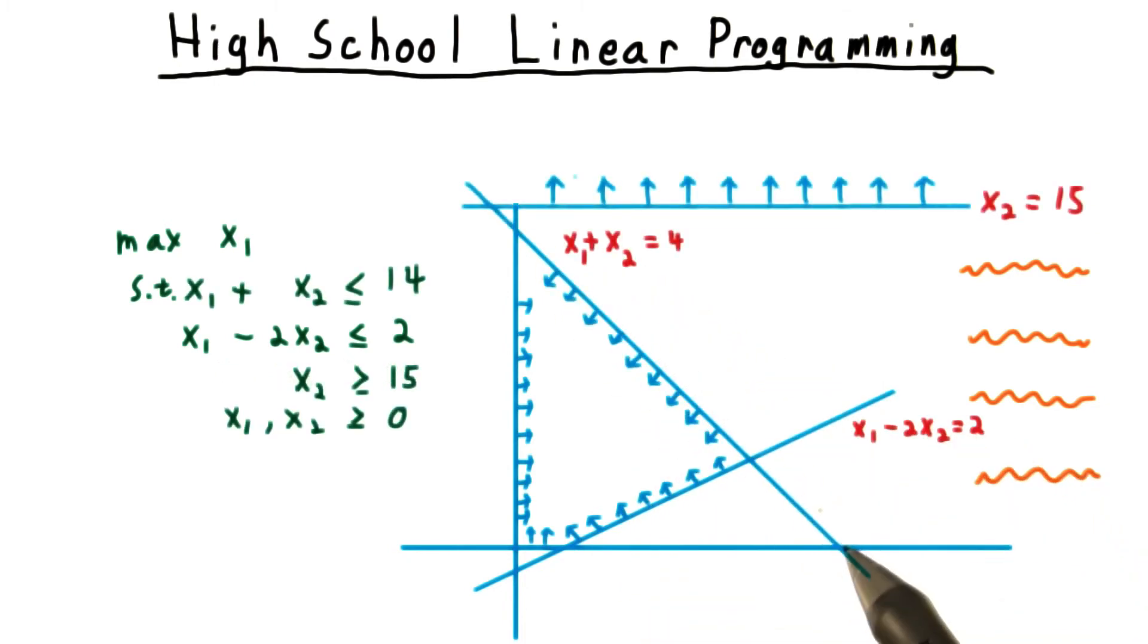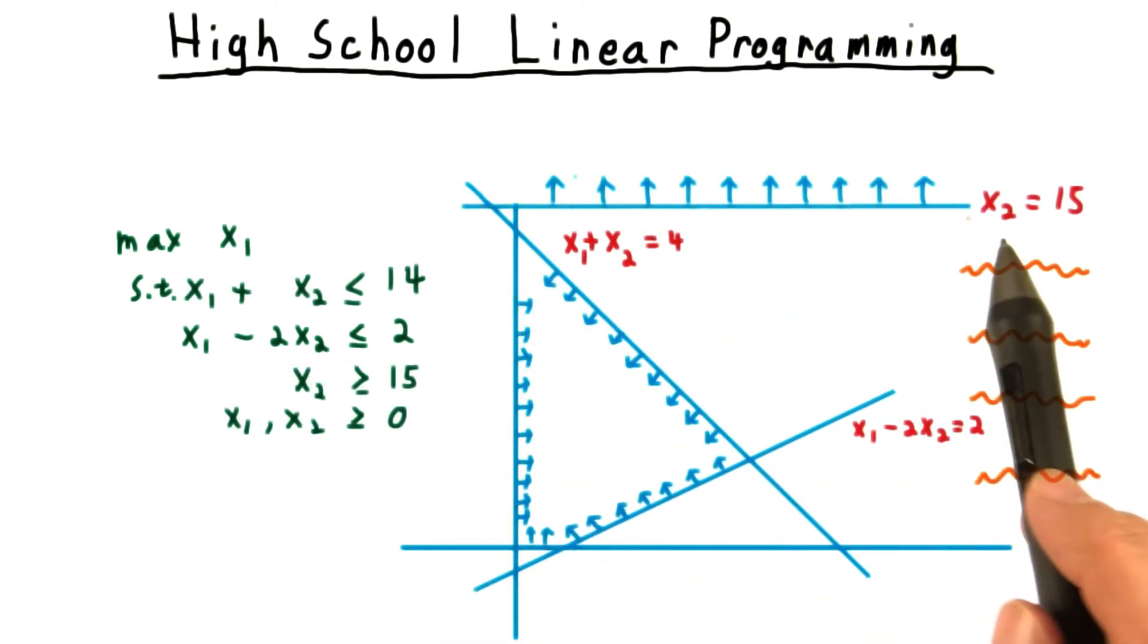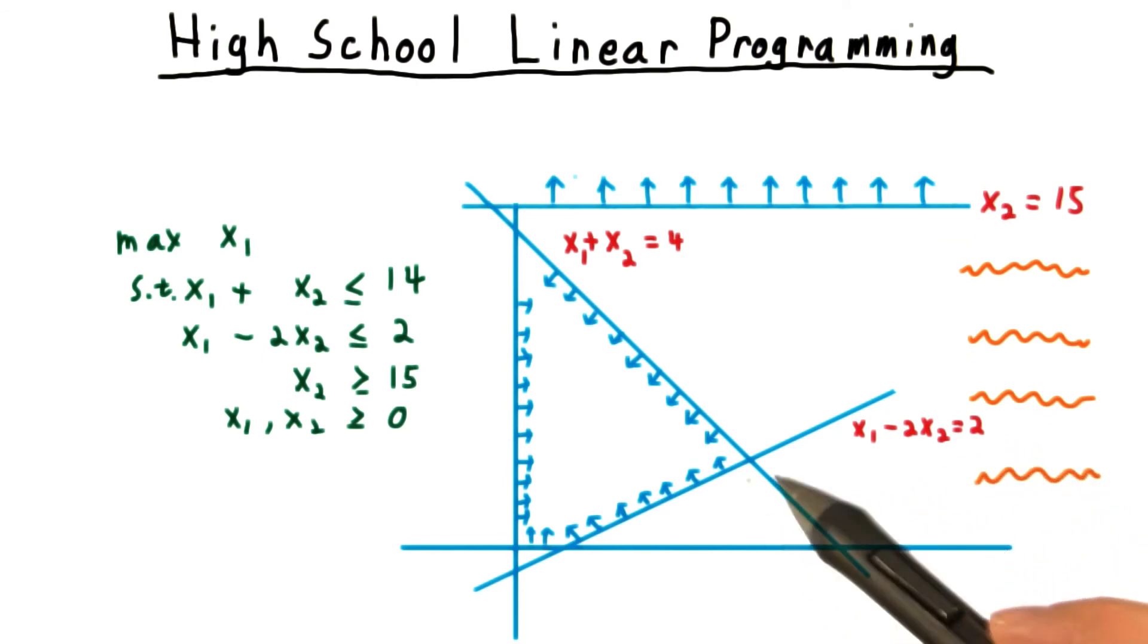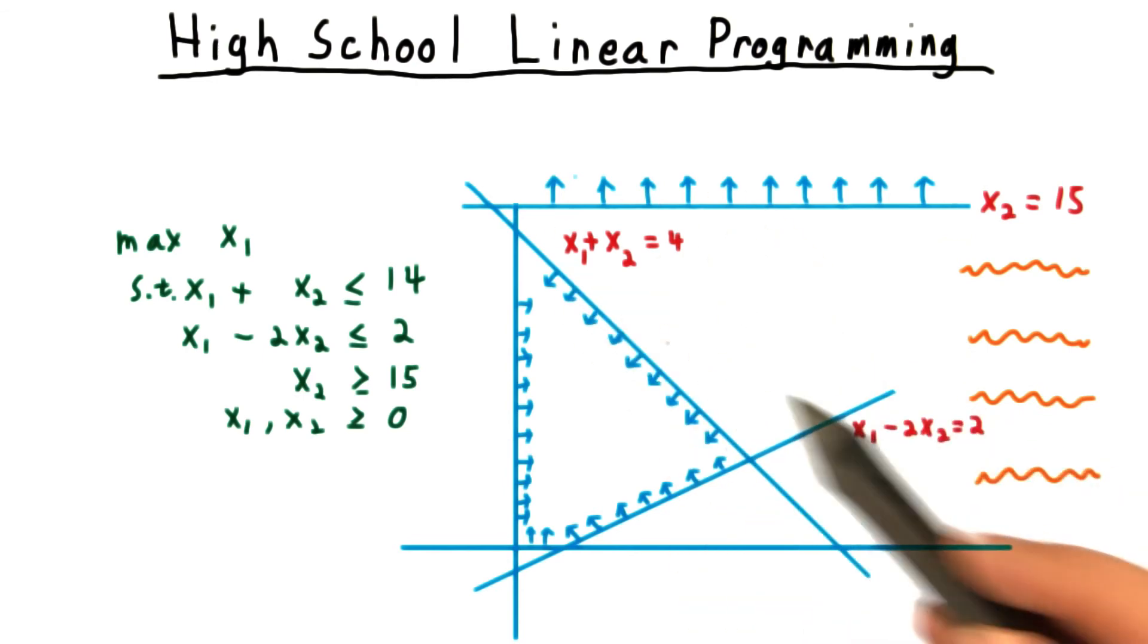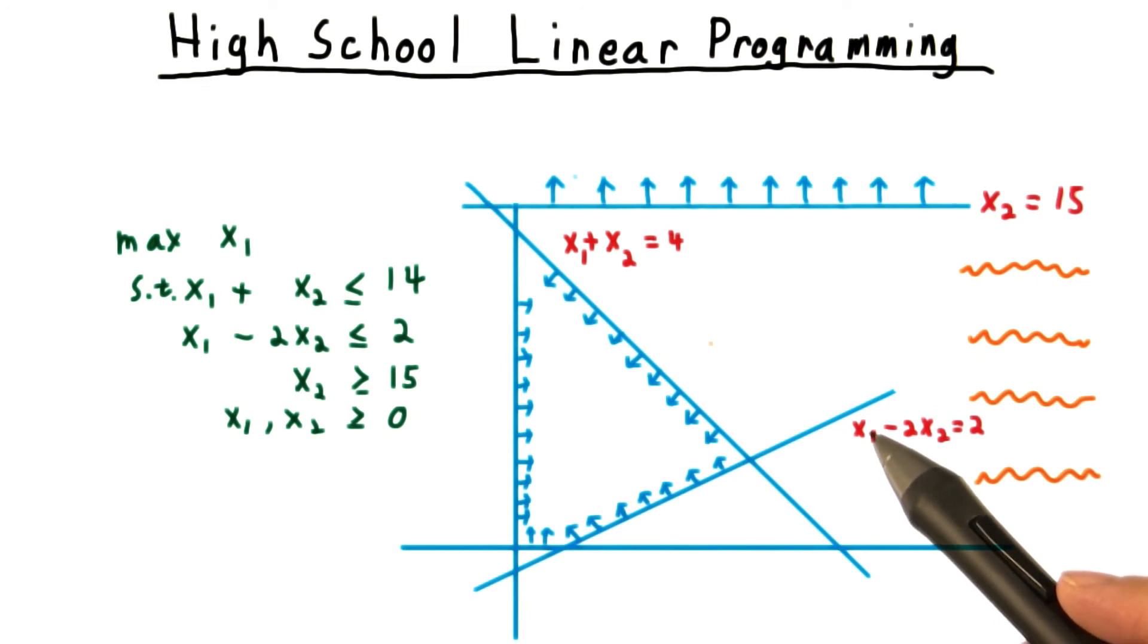On the other hand, if I put back that constraint and add another one, we might find that they are contradictory. There's no way to satisfy them all. If there are no solutions, there can't be an optimal one.